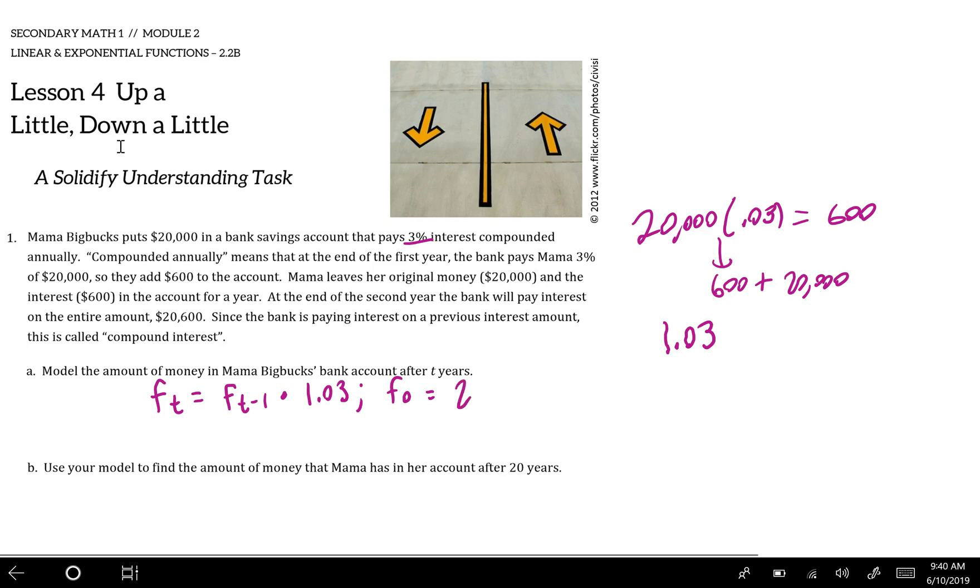But to answer question B, it says use your model to find the amount of money that Mama has in her account after twenty years. That's going to take quite a long time, so it's probably helpful for me to create an explicit rule F(T).